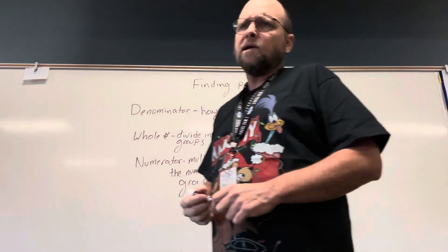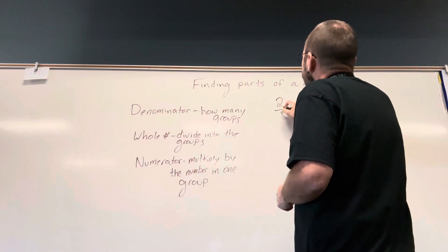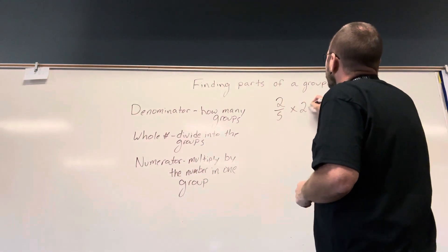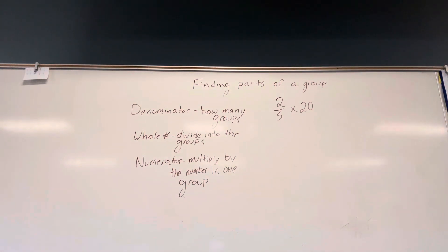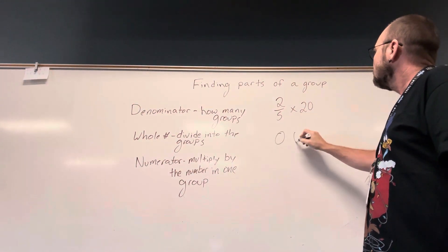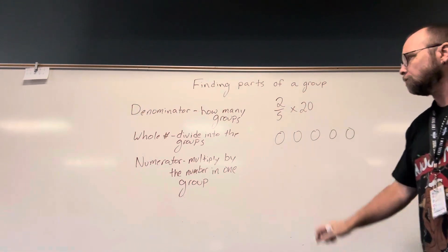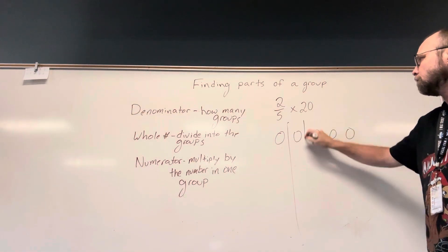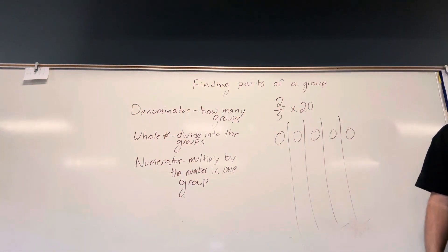All right, let's take two-fifths of twenty. Two-fifths multiplied by twenty. How many groups? Five. Five groups. So, I'm going to one, two, three, four, five. Our groups can run horizontal or vertical. I'll show you another way you could do the groups. I take twenty, and I divide them into those five groups.